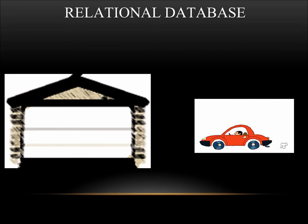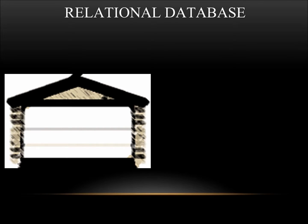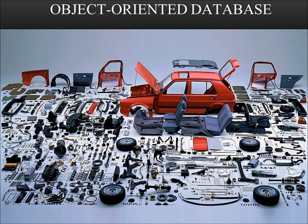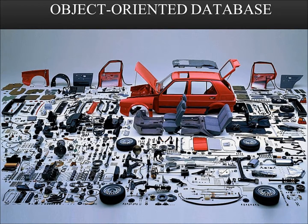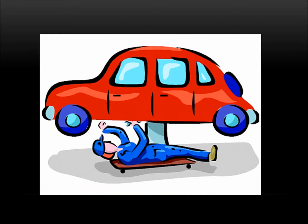In a practical example, think of a garage as the database and your car as the data. In a relational database, you'd be able to drive into the garage and park it until you'd like to use it again. Whereas in an object-oriented database, you'd have to disassemble the car and store it on different shelves in the garage. The next time you'd like to use the disassembled car, you'd have to find a mechanic who could speak the correct language so that the car would be fully functional again after being reassembled.